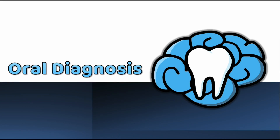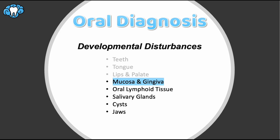Hey everyone, Dr. Ryan here and welcome back to our oral diagnosis series. Let's keep learning about developmental disturbances in the head and neck region and how to diagnose them appropriately. In this video, we'll talk about developmental anomalies involving the mucosa and the gingiva. In the previous video on the lips and the palate, we talked about lesions like a melanotic macule that can also occur on the mucosa and the gingiva — it's just more common to see those on the lips. Similarly, some of the things we talk about in this video can also occur on other surfaces like the lips or the palate, but they are going to primarily appear on the mucosa and gingiva.